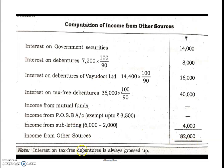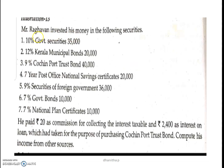If you get interest on tax-free securities, you must always do gross-up. If government securities require gross-up, you apply it to get the correct taxable amount. So the problem is clear. Next problem: Mr. Raghavan invested his money in the following securities — 10% government securities (less tax-free, so gross-up applies), Kerala Municipal Bond, Cochin Fortress Bond.